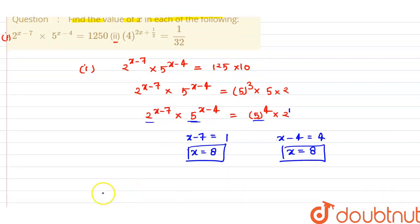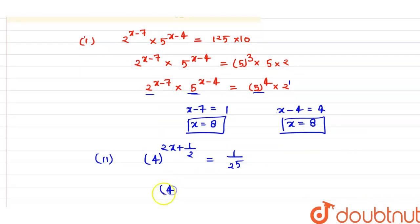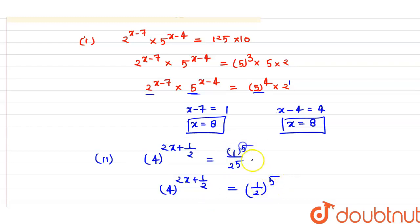For the second part, we are given 4 raised to the power (2x plus 1/2) equals 1 over 32. We can write 32 as 2 raised to the power 5, so this becomes 4^(2x + 1/2) equals 1 over 2^5, which we can write as (1/2)^5.